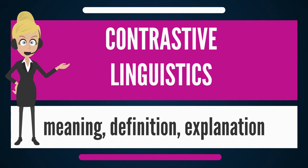Contrastive descriptions can occur at every level of linguistic structure: speech sounds (phonology), written symbols (orthography), word formation (morphology), word meaning (lexicology), collocation (phraseology), sentence structure (syntax), and complete discourse (textology).